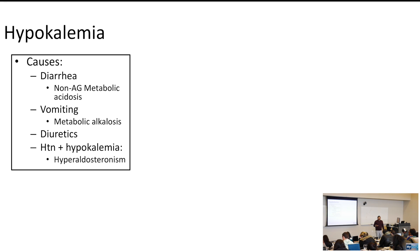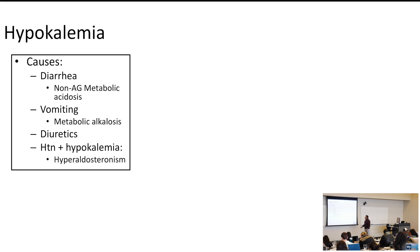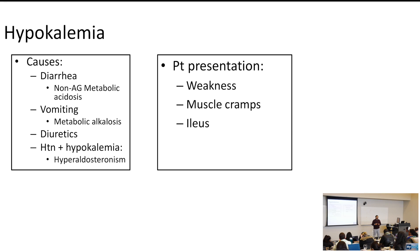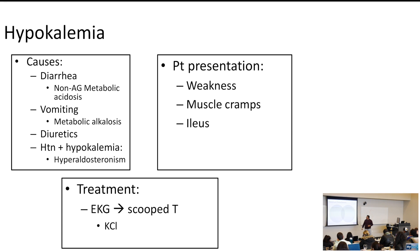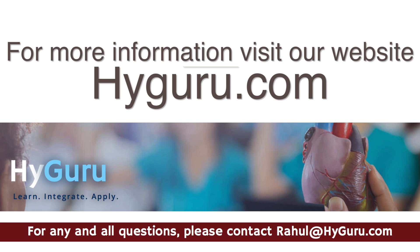For hypokalemia, the take-home point is high amounts of aldosterone. Diarrhea, vomiting, and diuretics all cause activation of the renin-angiotensin-aldosterone system, making you hypokalemic. Remember: hypertension plus hypokalemia should clue you in to a hyperaldosterone etiology. Patient presentation includes weakness, muscle cramps, and ileus — basically your bowel not moving. Treatment is straightforward: give potassium.